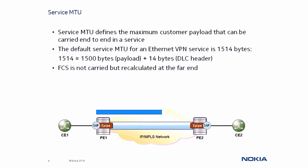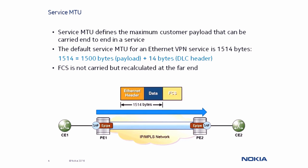Service MTU is the maximum customer payload that can be carried in a service. The default value for a Layer 2 VPN service is 1514 bytes, which is actually the size required to carry a standard Ethernet frame. The frame includes a 1500-byte payload and a 14-byte data link control or DLC header. Note that the frame check sequence or FCS is not included, as it is simply recalculated at the far end.